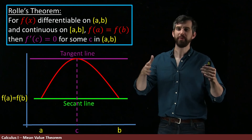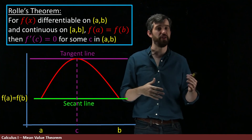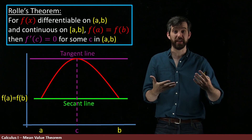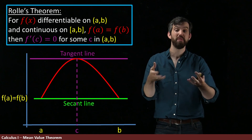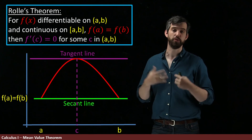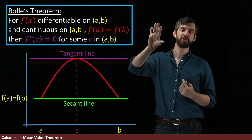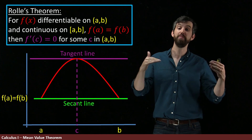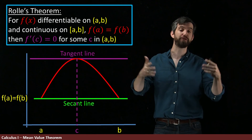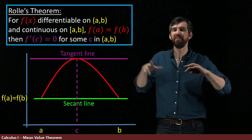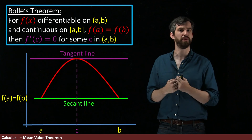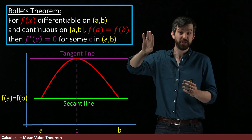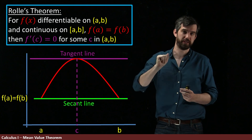One reason Rolle's Theorem and the Mean Value Theorem are both highlighted is that in mathematics we often prove things by starting with a simpler case and then generalizing. The canonical way to prove the Mean Value Theorem is to first prove Rolle's Theorem — the simpler special case — and then deduce the Mean Value Theorem from it. So even though we won't prove the Mean Value Theorem in this video, it's important to identify this historically significant special case.